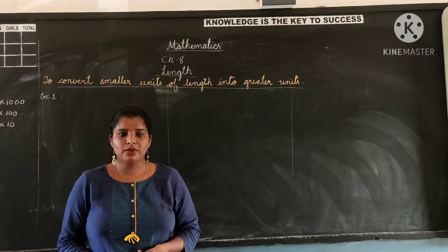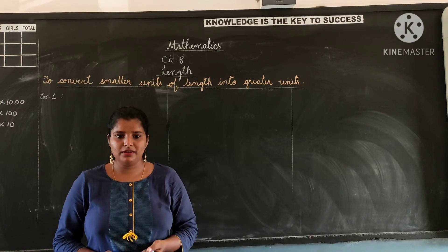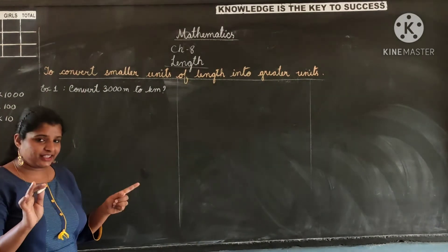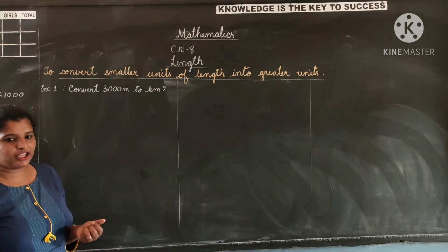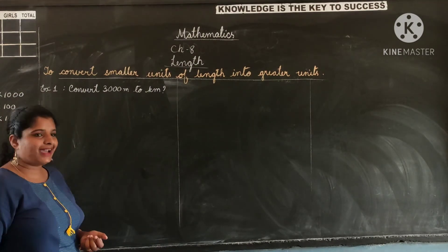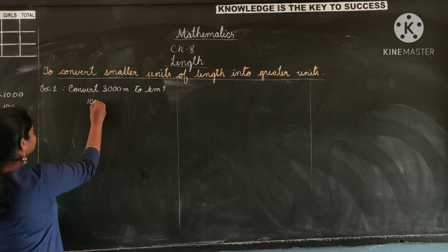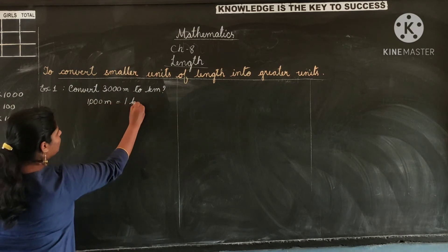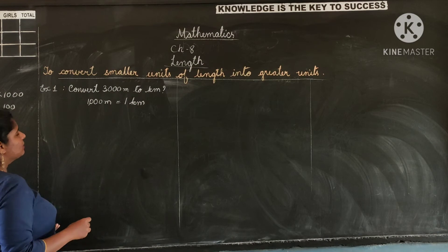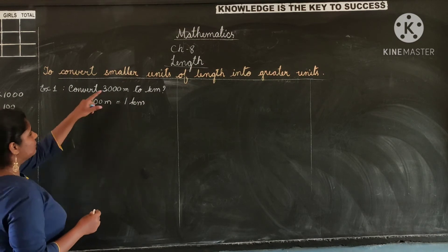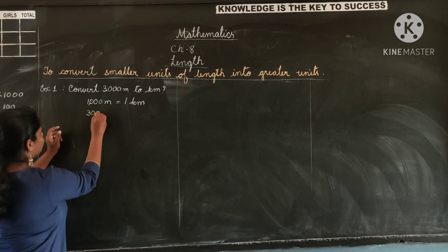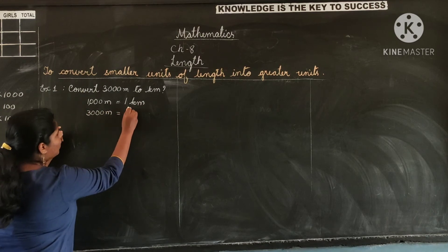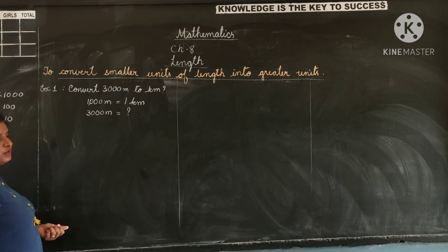Example 1: convert 3000 meters to kilometers. First, recall the relationship between meter and kilometer. We know that 1000 meters make 1 kilometer. So to convert 3000 meters into kilometers, what are we supposed to do?